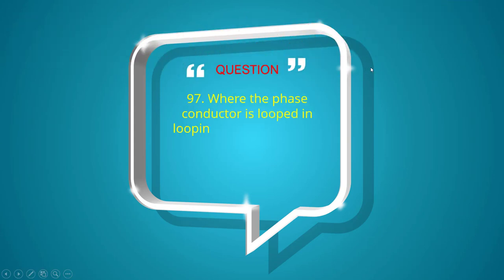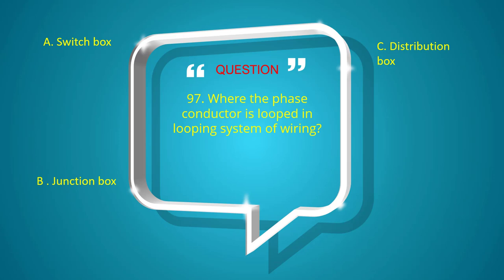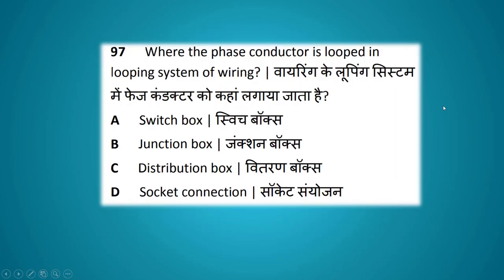Where is the phase conductor looped in a looping system of wiring? Options: switch box, junction box, distribution box, socket connection. The answer is socket connection.